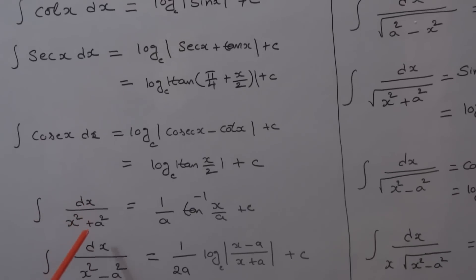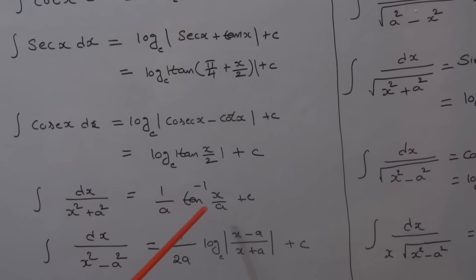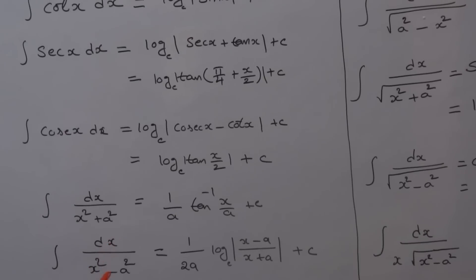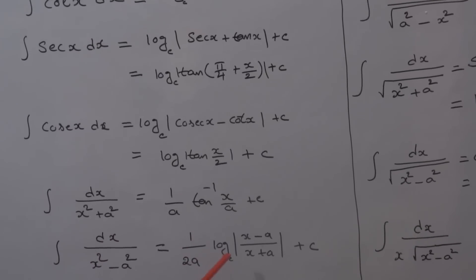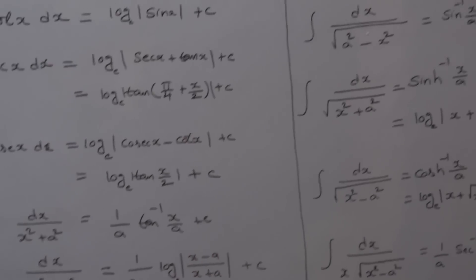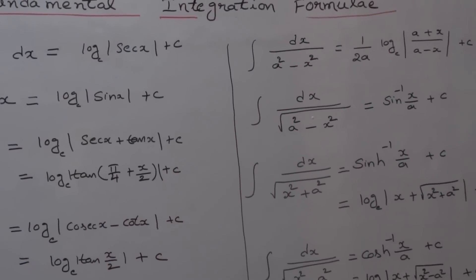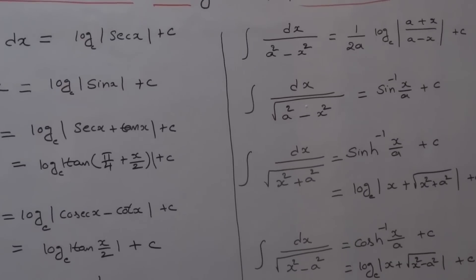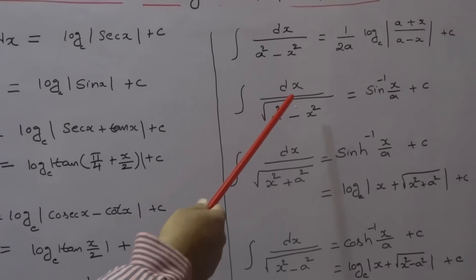Integral of dx by (x² + a²) is equal to (1/a) tan⁻¹(x/a) plus c. Integral of dx by (x² - a²) is equal to (1/2a) log of modulus of (x - a)/(x + a) plus c. Integral of dx by (a² - x²) is equal to (1/2a) log of (a + x)/(a - x) plus c.